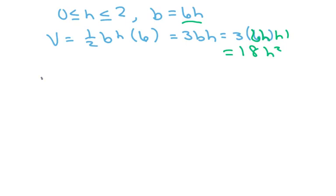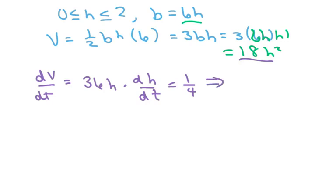Therefore, we're going to take the derivative of the volume with respect to time, that's going to give you, take the derivative of that, you get 36H times the derivative of H with respect to time. And derivative of H with respect to time is going to be 1 fourth, and then if we want, we can, we want to solve for derivative of H, which times the height, so the derivative of H with respect to T is going to equal 1 over 144H.